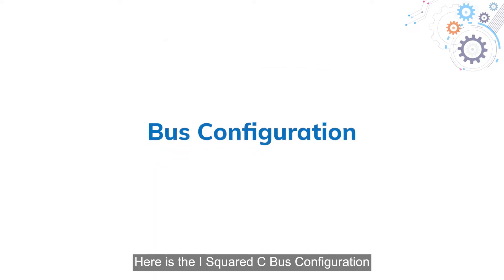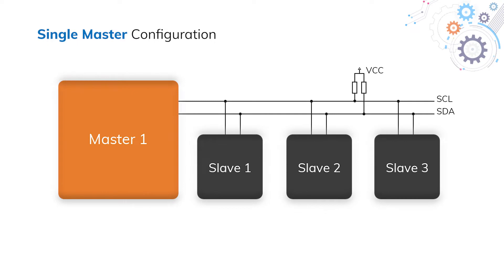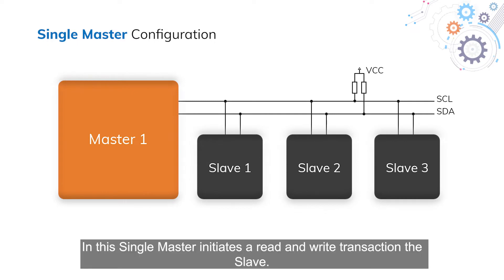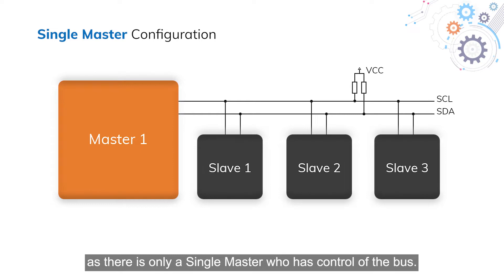Here is the I2C bus configuration. Single master configuration: In this, a single master initiates a read and write transaction to the slave. There is no concept of bus arbitration here as there is only a single master who has control of the bus.